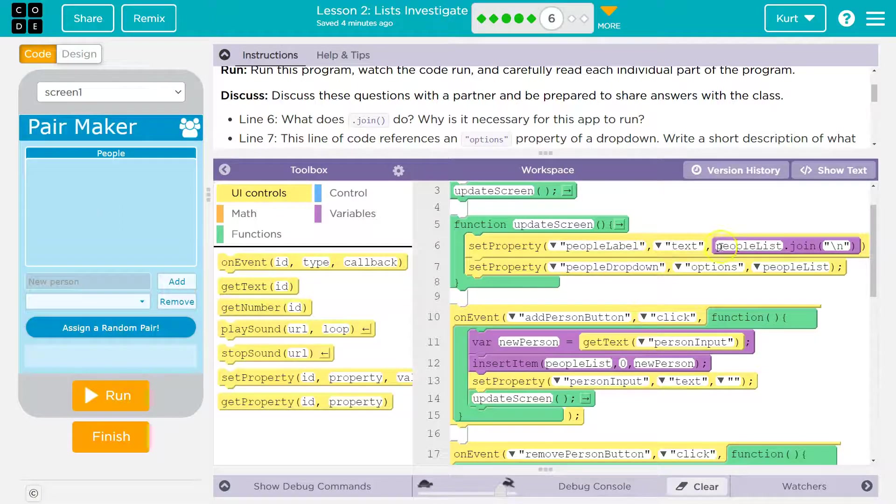People label text. Oh, people list join in. So what that's doing is it's smacking a new line, a line break in between each item of the list as we're slapping it up. Okay.